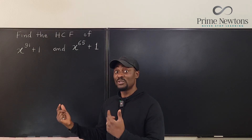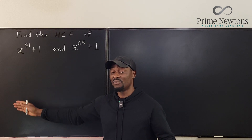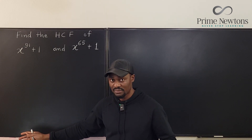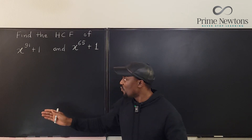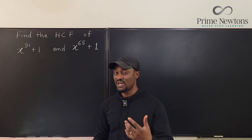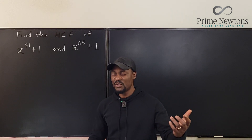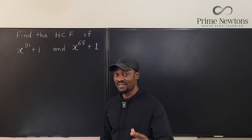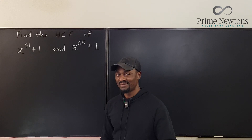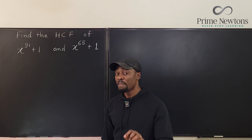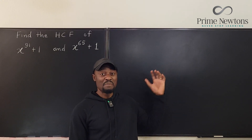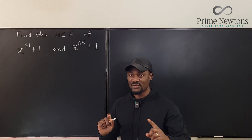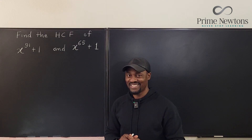That looks almost impossible because you can't list all polynomials that divide x to the 91 plus 1. But if we treat these two polynomials as if they were numbers, it's possible to find the highest common factor using the Euclidean algorithm. I'm going to show you how to use the Euclidean algorithm — that's exactly what we're going to apply to these two polynomials. Let's get into the video.